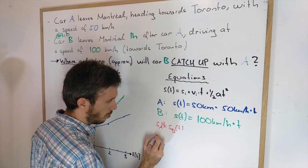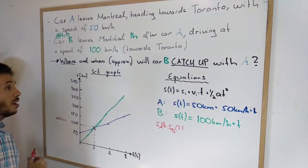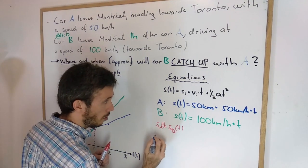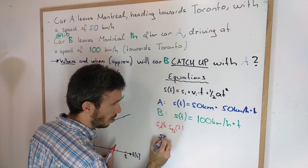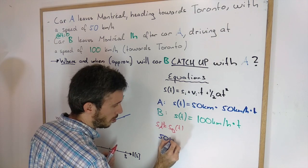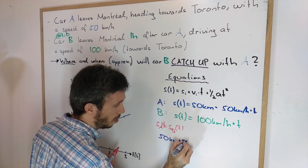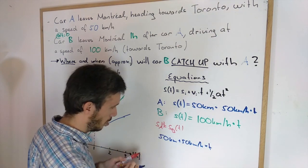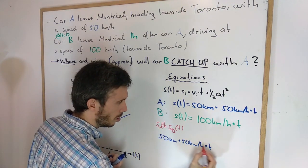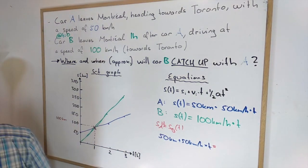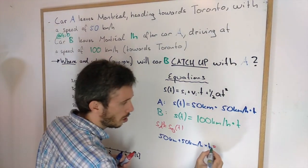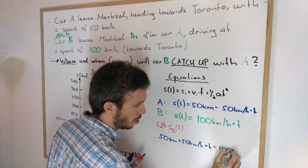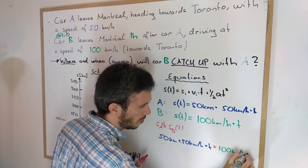So I can write my S_A, 50 km plus 50 km per hour times time, equals 100 km per hour times time.